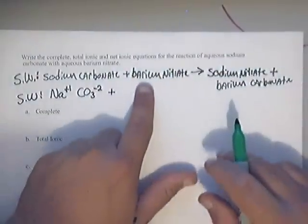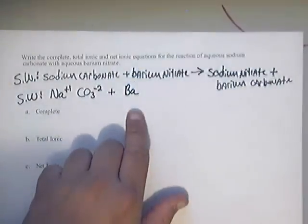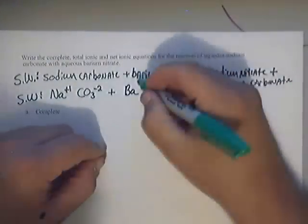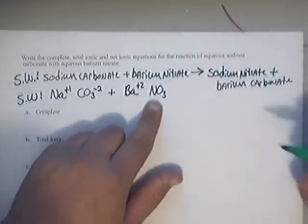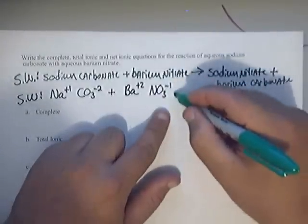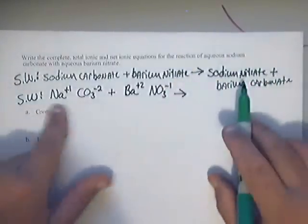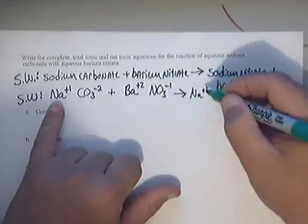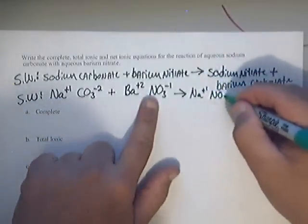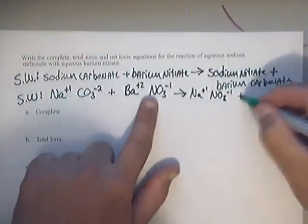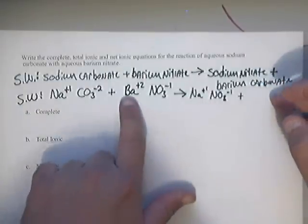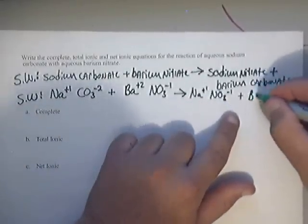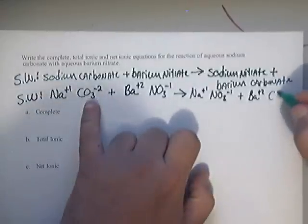Over here, barium is Ba, and if you look, barium is in column number 2, so it's a plus 2. All metals get positive charges. And nitrate, if you look on the back of the white sheet, is NO3 negative 1. All you have to do is look at this and write those down. Take sodium, which is Na plus 1, and put it with NO3 negative 1. This is just your scratch work to get your thoughts together.